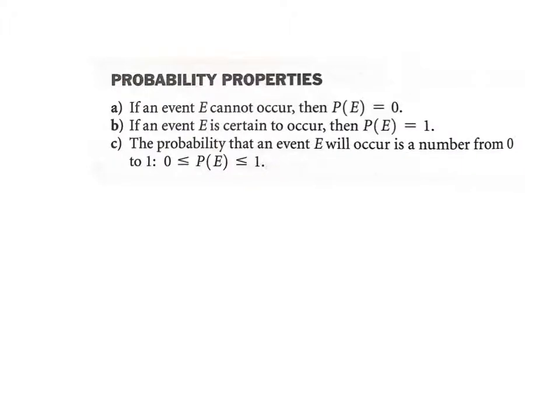A few properties here that you really need to know. If an event cannot occur, meaning it's impossible, the probability of that event is zero. If an event has to occur, the probability of that event is one. So the probability of any event that will occur is some number between zero and one. Zero being impossible, one being for certain, and everything in between is okay. But probability must be between zero and one.